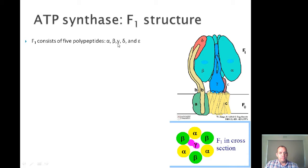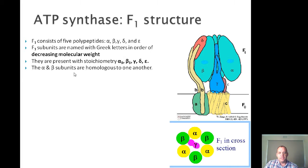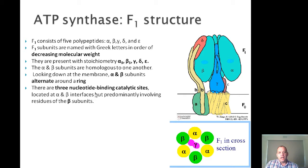The F1 consists of five polypeptides: alpha, beta, gamma, delta, and epsilon, named in order of decreasing molecular weight. The general stoichiometry is three alpha subunits, three beta subunits, and one each of gamma, delta, and epsilon. The alpha and beta subunits are homologous to each other and are organized in a ring of alternating alpha and beta units. There are three nucleotide binding catalytic sites at alpha-beta interfaces, predominantly involving residues of the beta subunits, so there are binding sites for ATP and ADP on the beta subunits. The alpha subunits bind ATP but are not catalytic — they contain a tightly bound ATP but are inactive in catalysis.